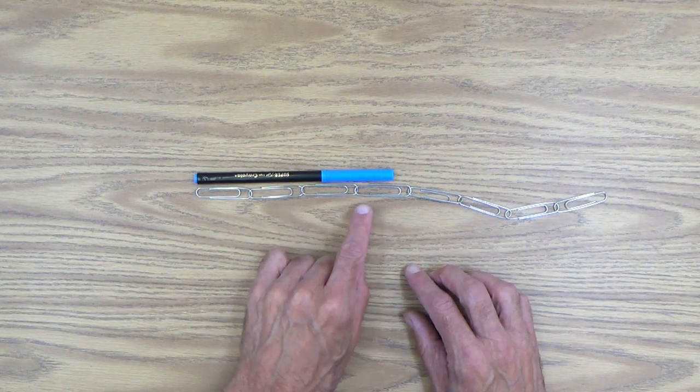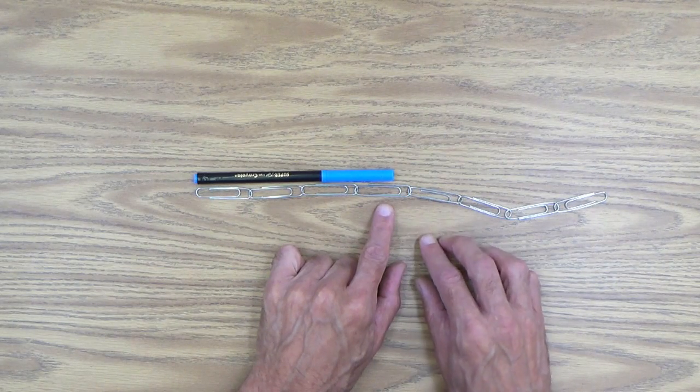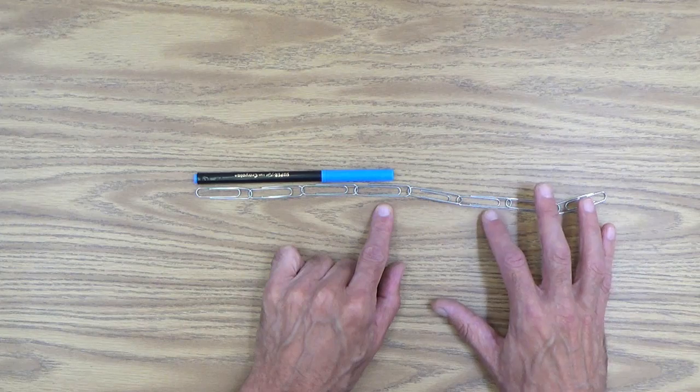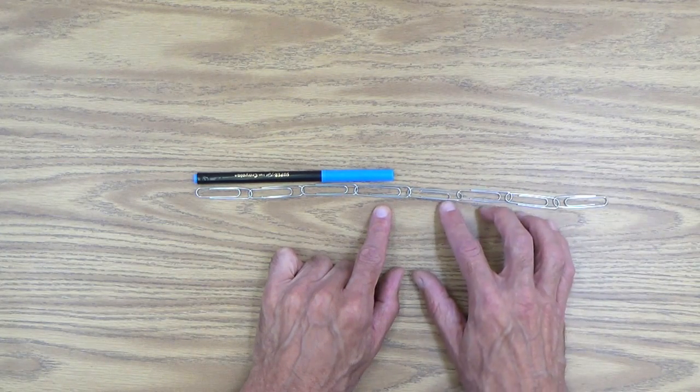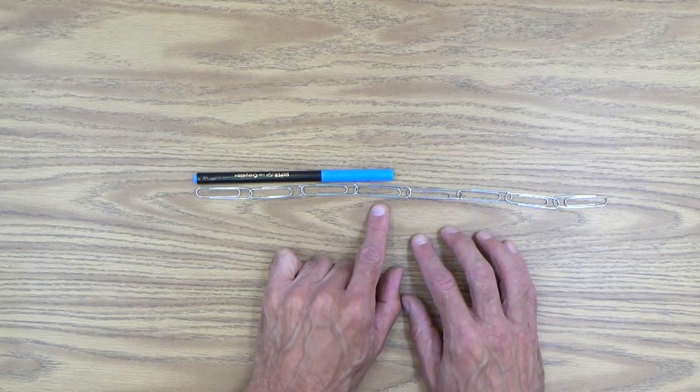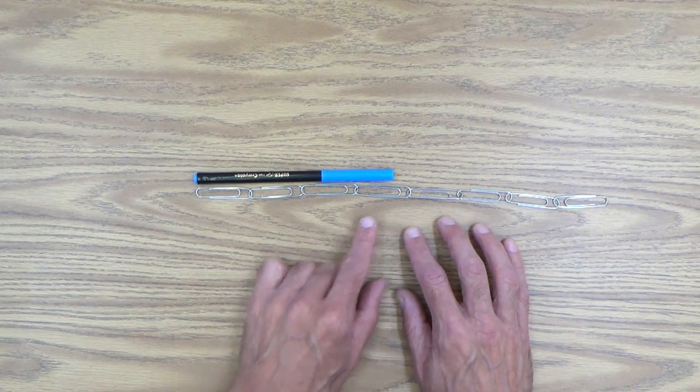And then you can count the number of paper clips. One, two, three, uh-oh, almost four. And of course, using this method, we will have to approximate. So this will be a good lesson for your child to learn the concept of approximation.